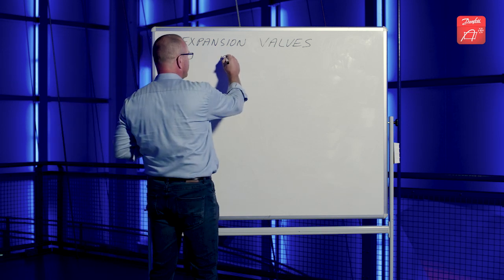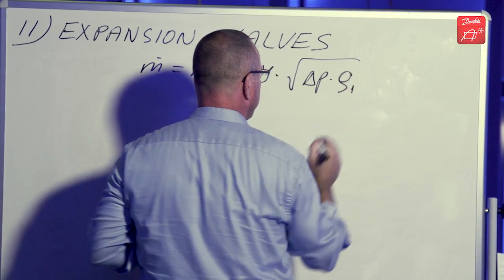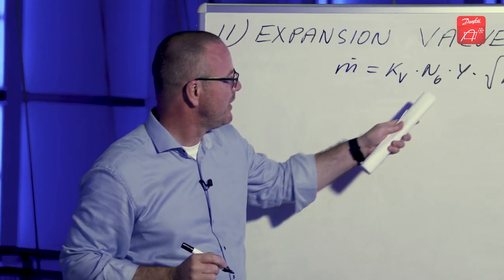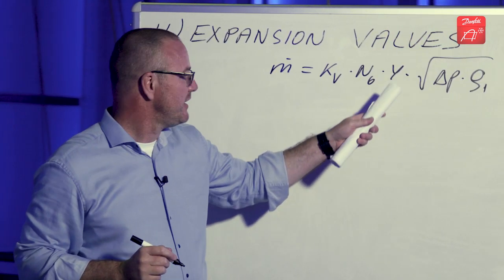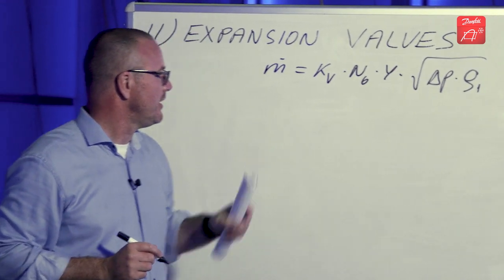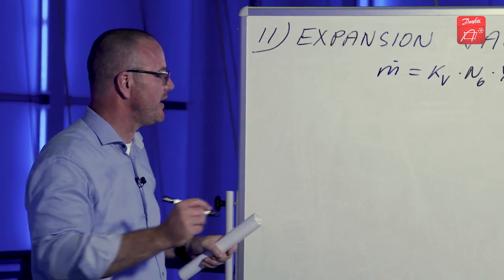We start out by looking at the basic valve equation. This is the equation we use for both compressible and incompressible flow and the net expansion factor just has a value of one for incompressible and something different for compressible flow. So as I said, we approach the one expansion valve by having three valves.